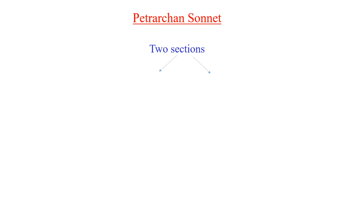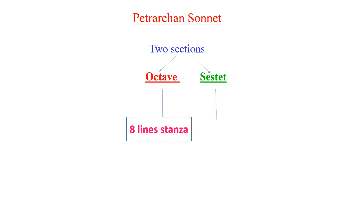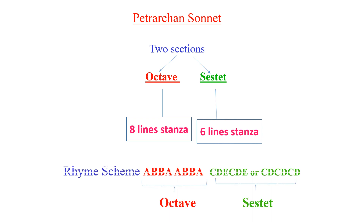Now for the Petrarchan sonnet — the lines are arranged in two sections: an octave and a sestet. The octave is an 8-line stanza and the sestet is a 6-line stanza, making 14 lines altogether.